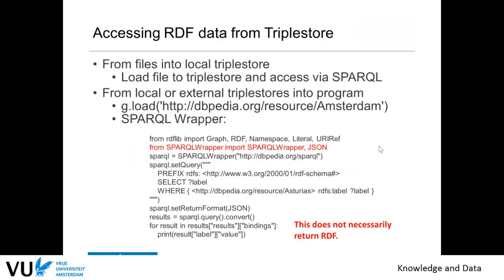The alternative is to use a triple store. The triple store is a database that has been built on purpose to be efficient when dealing with graph data, with labeled graph data and with RDF data in particular. You can run your own local triple store — you load your file into it and then access it via SPARQL. You can do that either within your program and environment, as I showed in the previous slide, or via HTTP, which I'm going to show shortly.